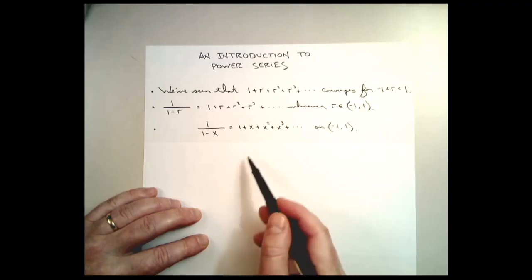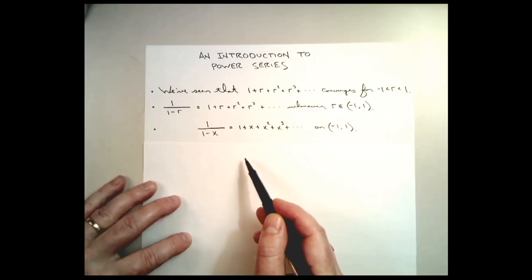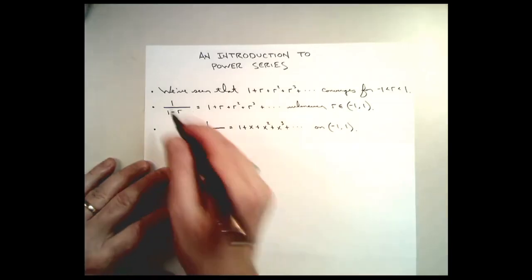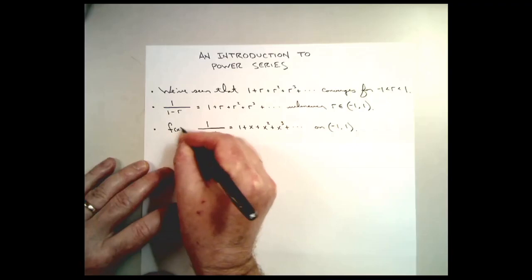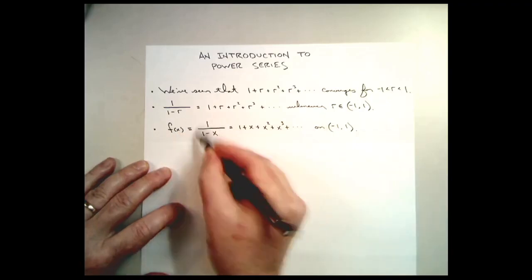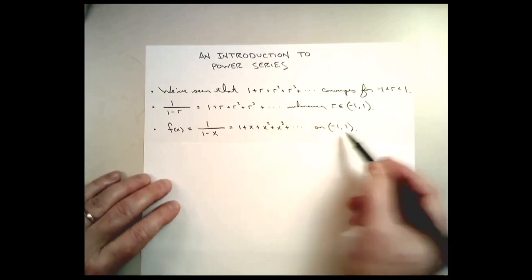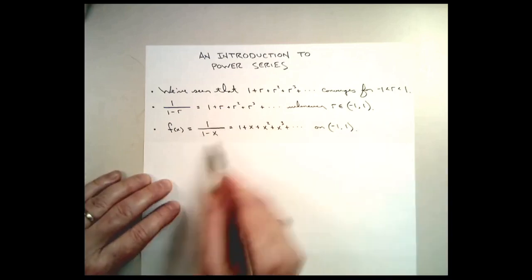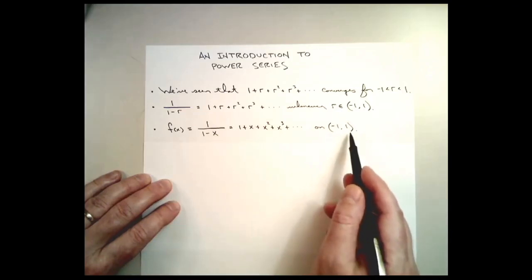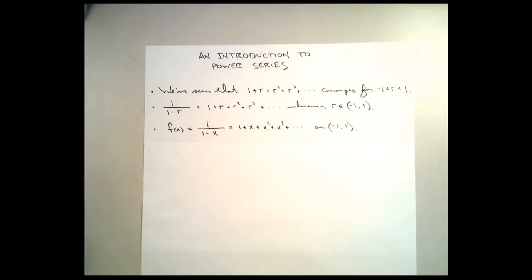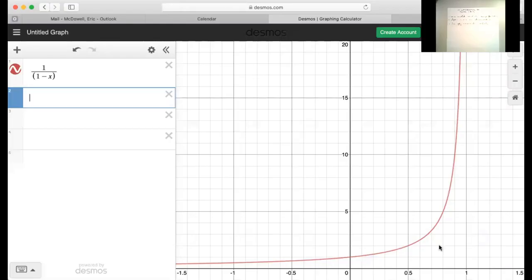While nothing changes substantially, it looks different to us. Using the letter x in there reminds us of functional notation. And in fact, that's what I want to do — I want to think about this expression as a function on the interval from negative 1 to 1, and recognize that this function, at least on this interval, is exactly the same as this series on this interval. To demonstrate that more concretely, I'd like to look at some graphs of these two functions together.